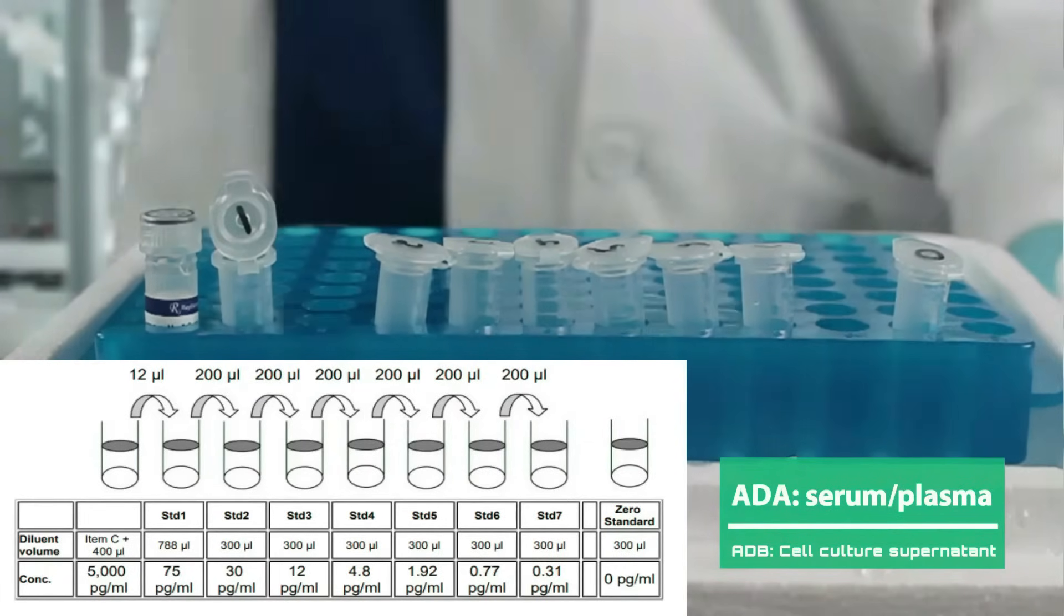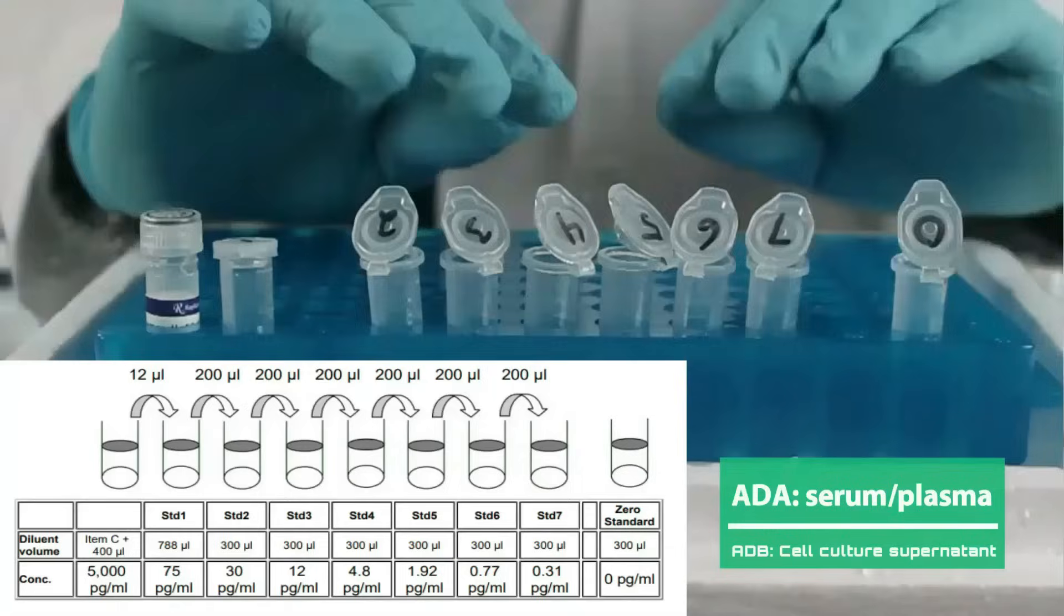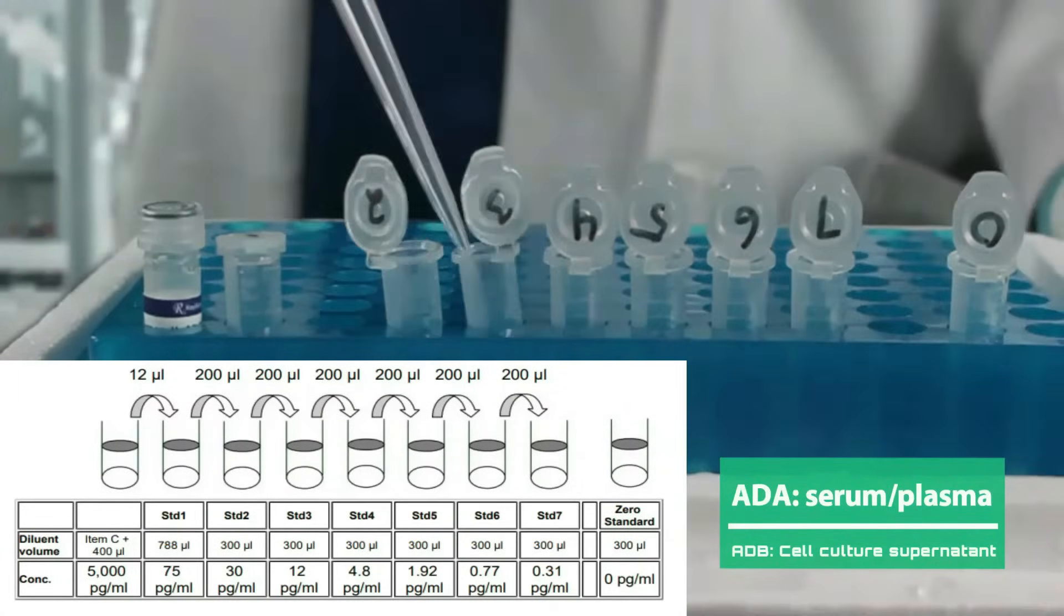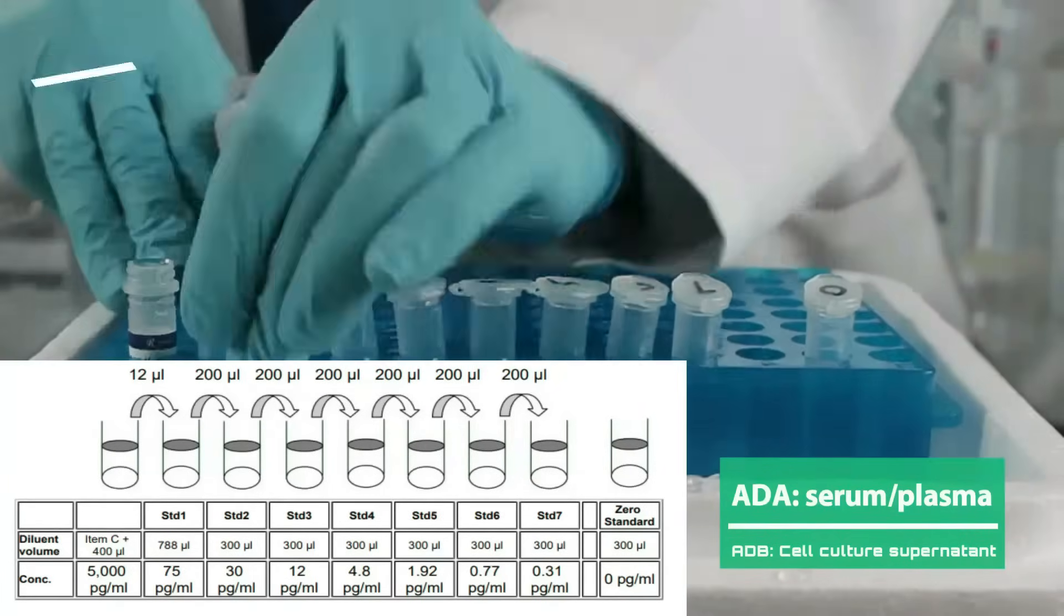Good laboratory practices are always to spin volumes down prior to diluting. When you mix, it will be with the full volume. This helps with our precision. Once this is complete, you are ready to start the standard curve.